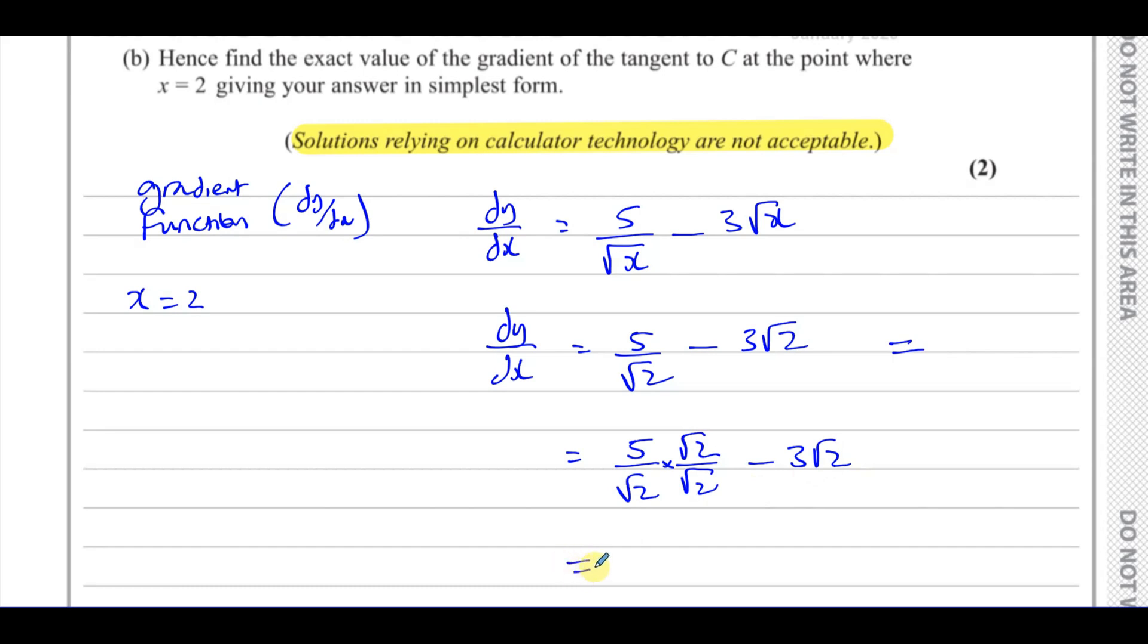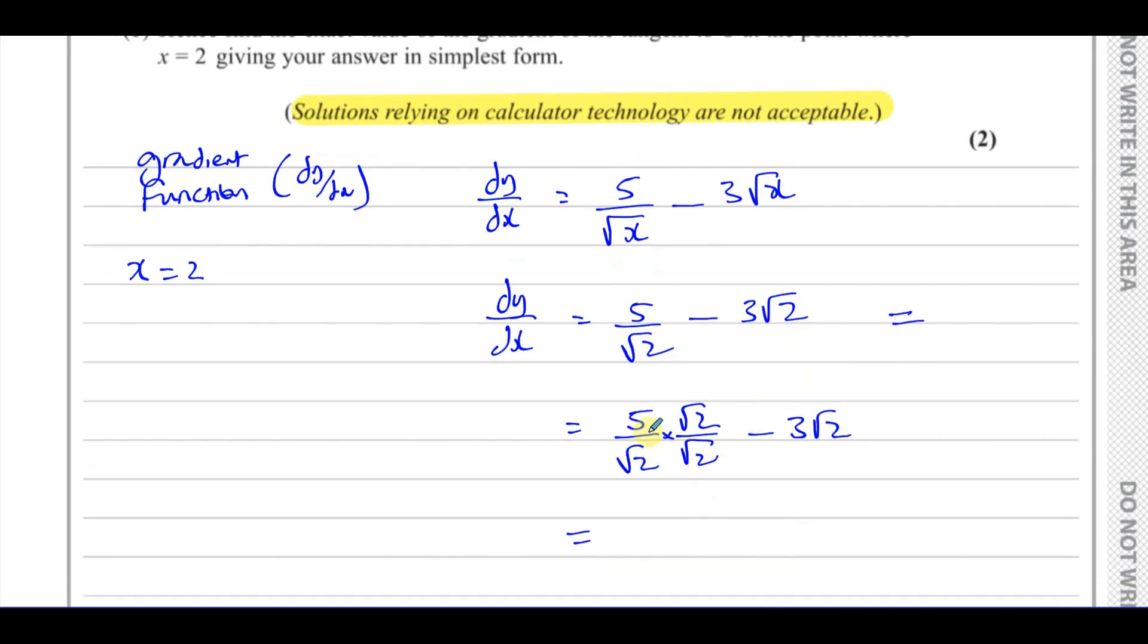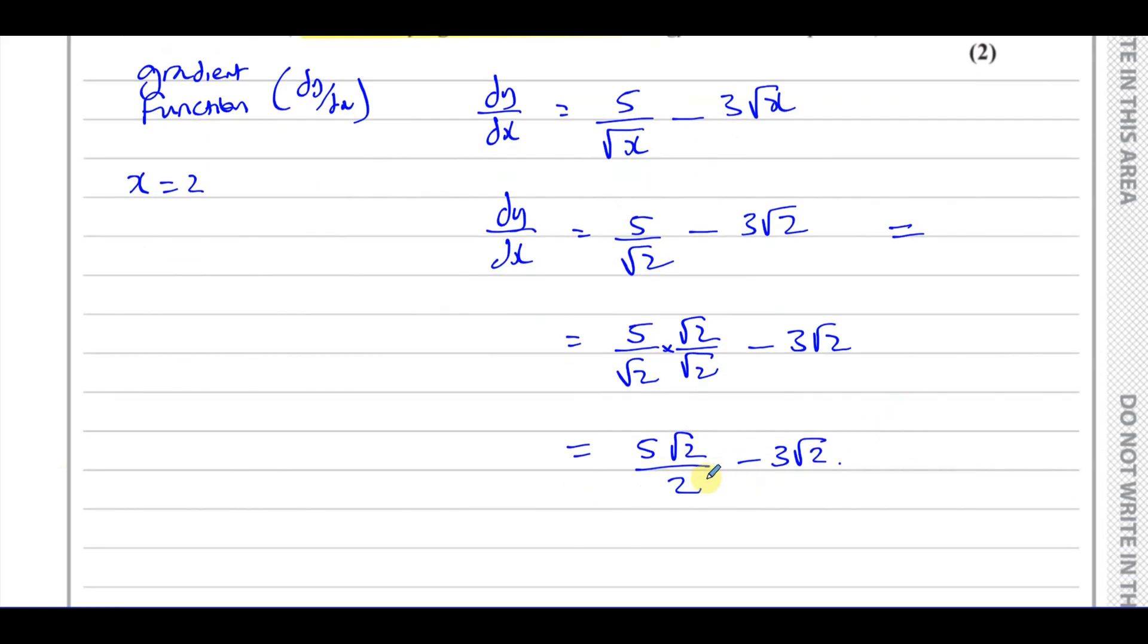And then this gives us 5 times root 2. So that's going to be 5 root 2 over 2. So you have 5 root 2 over 2 minus 3 root 2. And now we need to simplify this. This is like 5 root 2 over 2 minus 6 over 2 root 2. So 5 root 2 over 2 minus 6 over 2 root 2. Which if you simplify that, that's 5 minus 6 is minus 1. So it's minus 1 root 2. So minus root 2 over 2.